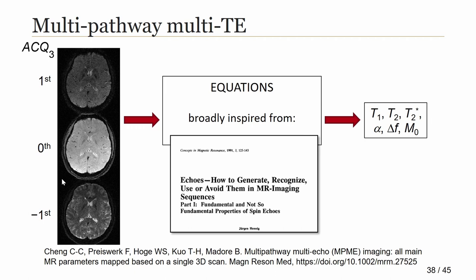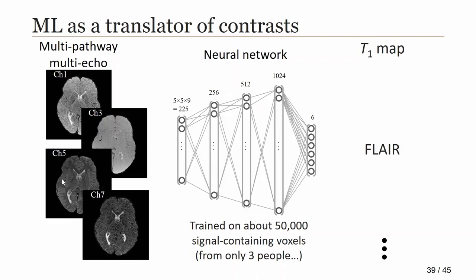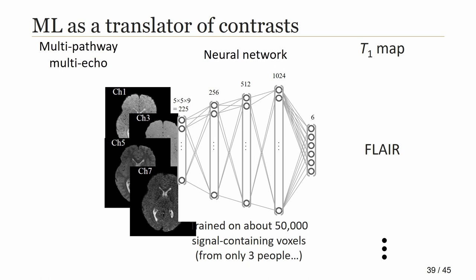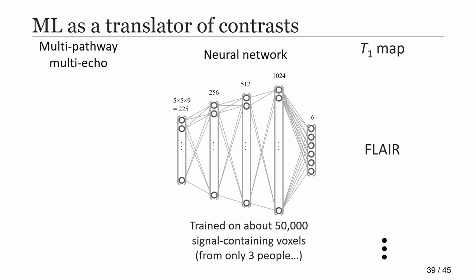We developed a sequence that samples a few different pathways at different echo times every single TR. These datasets capture a lot of information about the image data, and we developed equations — heavily based on work by Dr. Henning — to convert these datasets into quantitative maps. We wanted to push one step further and use machine learning, specifically a neural network, to translate contrast. We've grown to believe that our multi-pathway, multi-echo acquisitions contain a lot of information about the object, but may not be in quite the right format for radiologists. So we want to feed them into a neural network that converts them into contrasts radiologists prefer, like quantitative T1 maps or FLAIR.